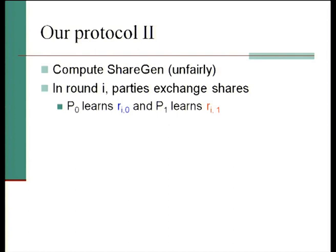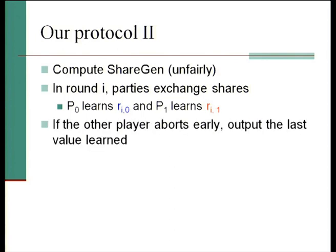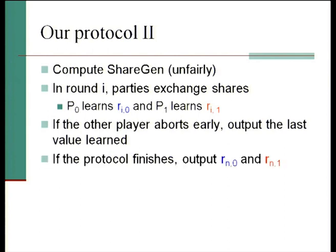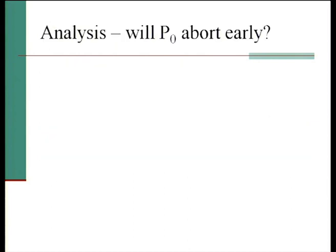In each round, the parties exchange shares and each player learns its R value for that round. If at some point the other player aborts early, the remaining player simply outputs the last R value they received, or if they haven't received any yet, guesses according to their guessing distribution. If the protocol finishes, they output their final R value.